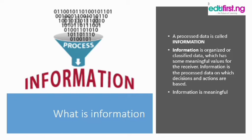Information is meaningful. For example, when a student gets admission into a school, he or she fills an admission form which consists of his name, gender, father's name, address, and so on. All this data has been gathered and processed to give information. From that information, the school or college will now make a useful decision based on the data that has been gathered.